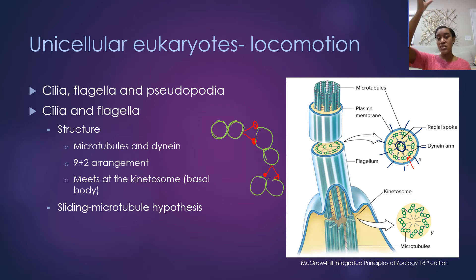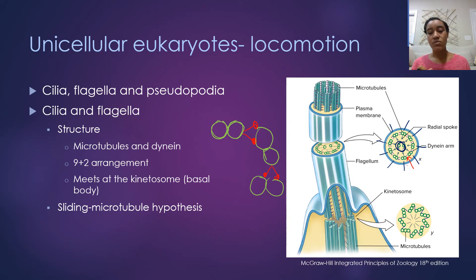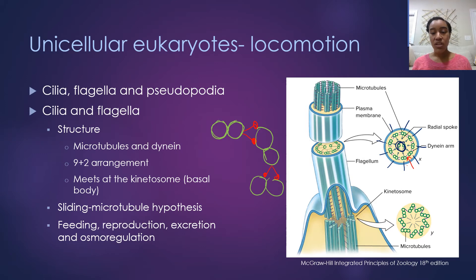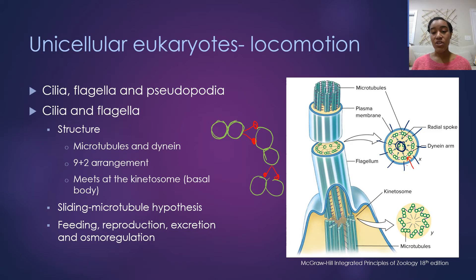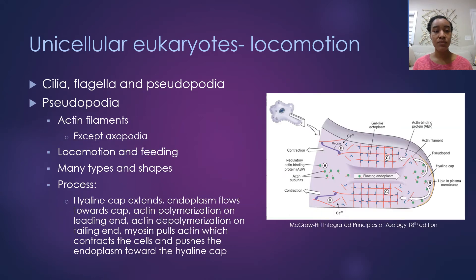The microtubules extend the entire length of the flagella and meet at a kinetosome or basal body inside the cytoplasm. Cilia and flagella can vary in number — some unicellular eukaryotes have one flagellum, some have two or four. Cilia are hair-like structures covering the organism, and their number and placement vary by species. Both cilia and flagella are used not just for locomotion but also for feeding, reproduction, waste excretion, and maintaining osmoregulation.